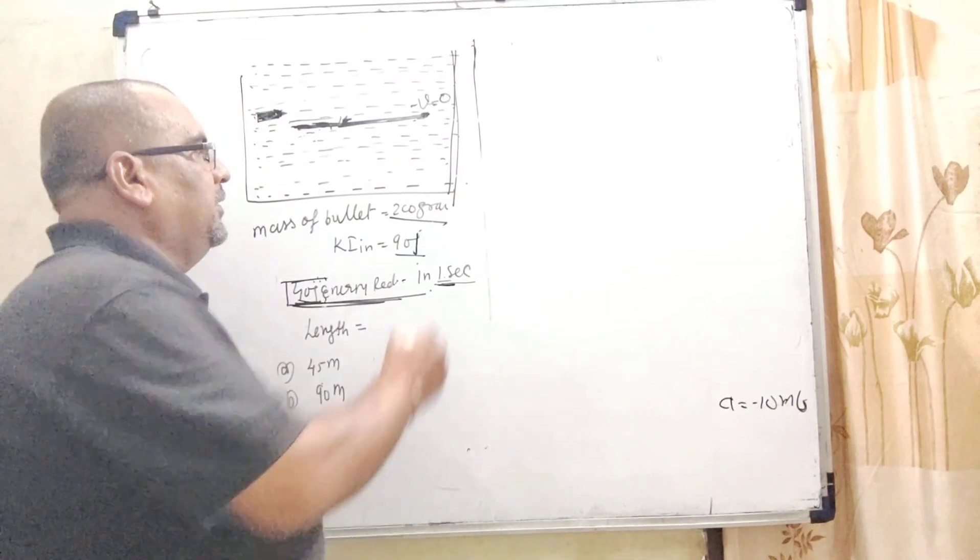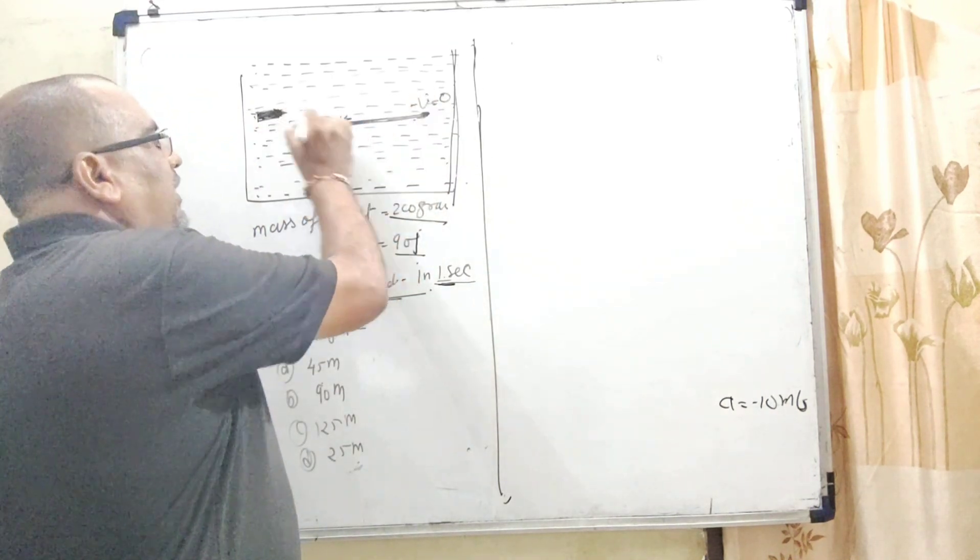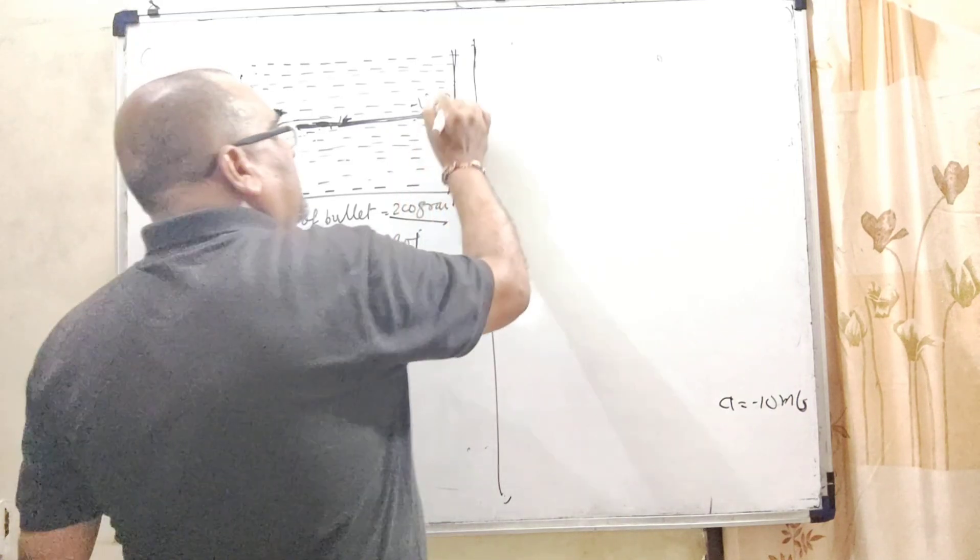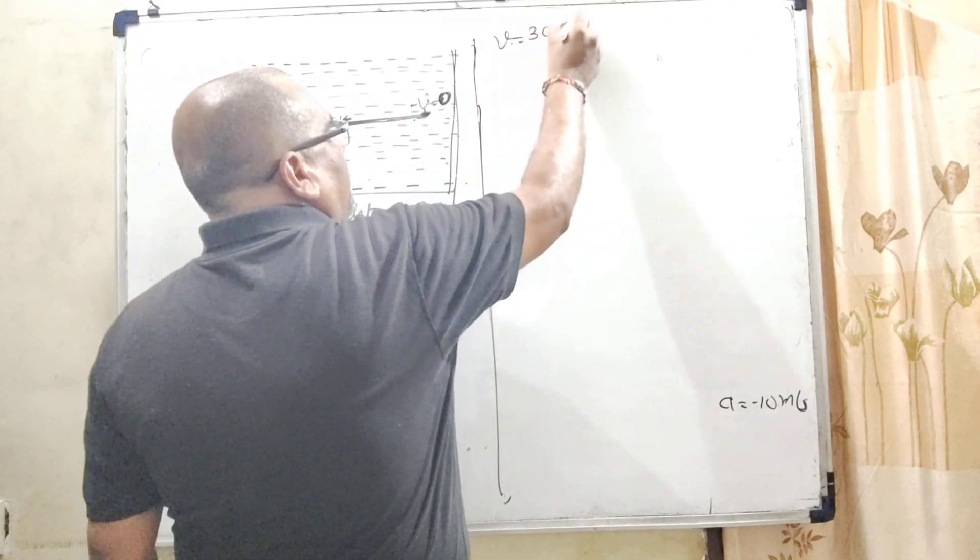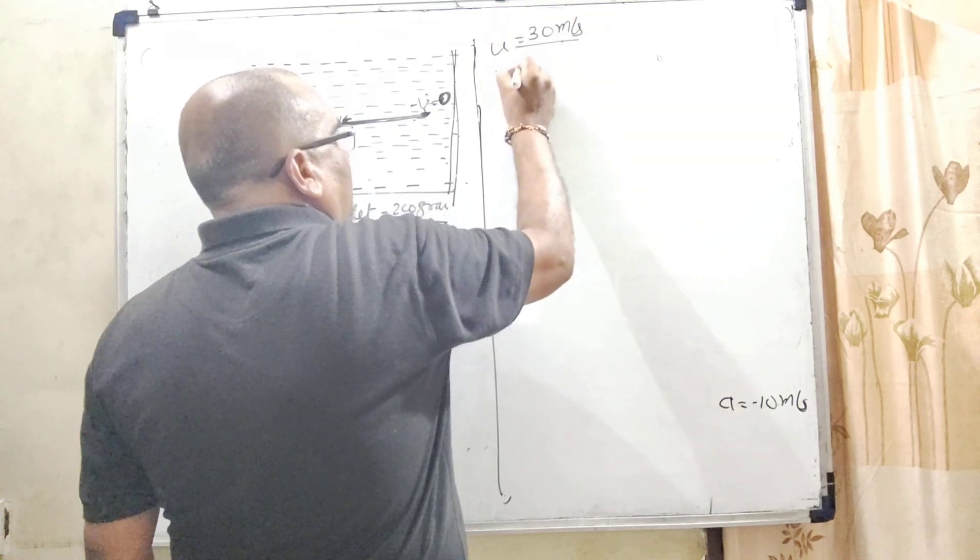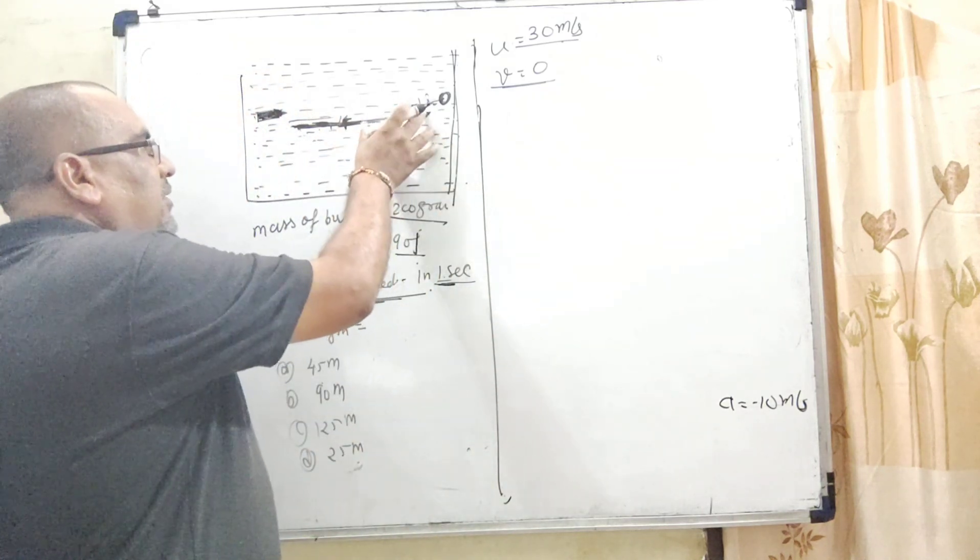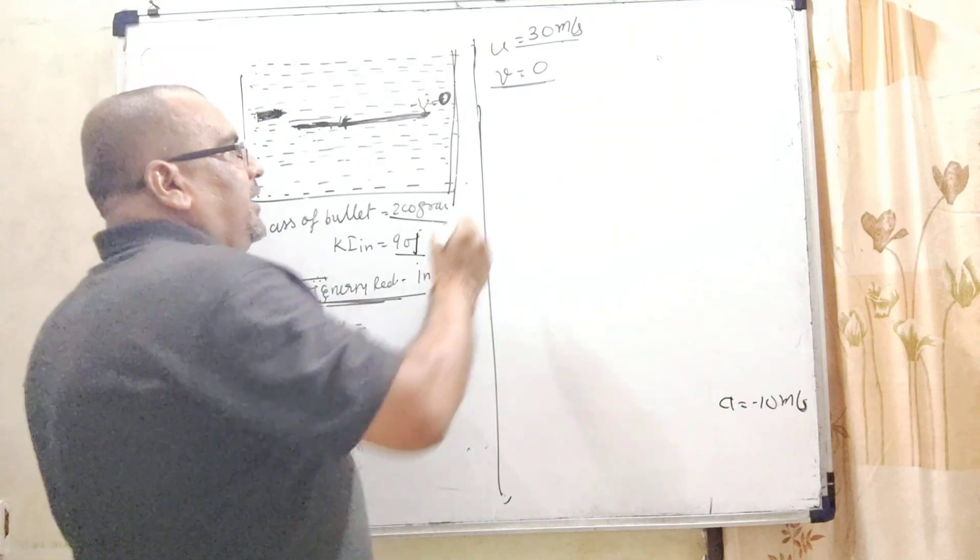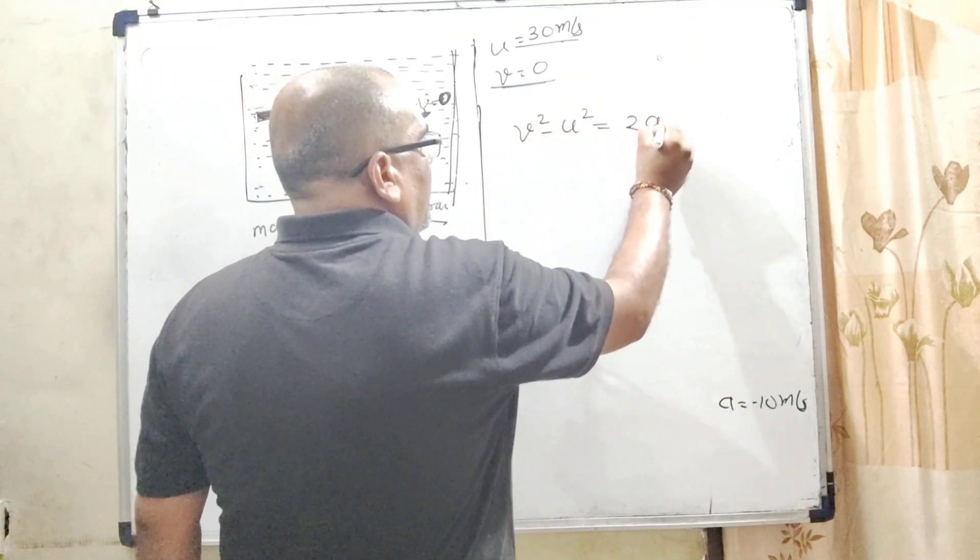Now for the final case, the bullet comes to rest. In that case, final velocity becomes 0, but initial velocity is 30 meters per second. Initial velocity is u, final velocity is 0, and we have to calculate the distance covered to come to rest. In that case, we use the formula v squared minus u squared equals 2as.